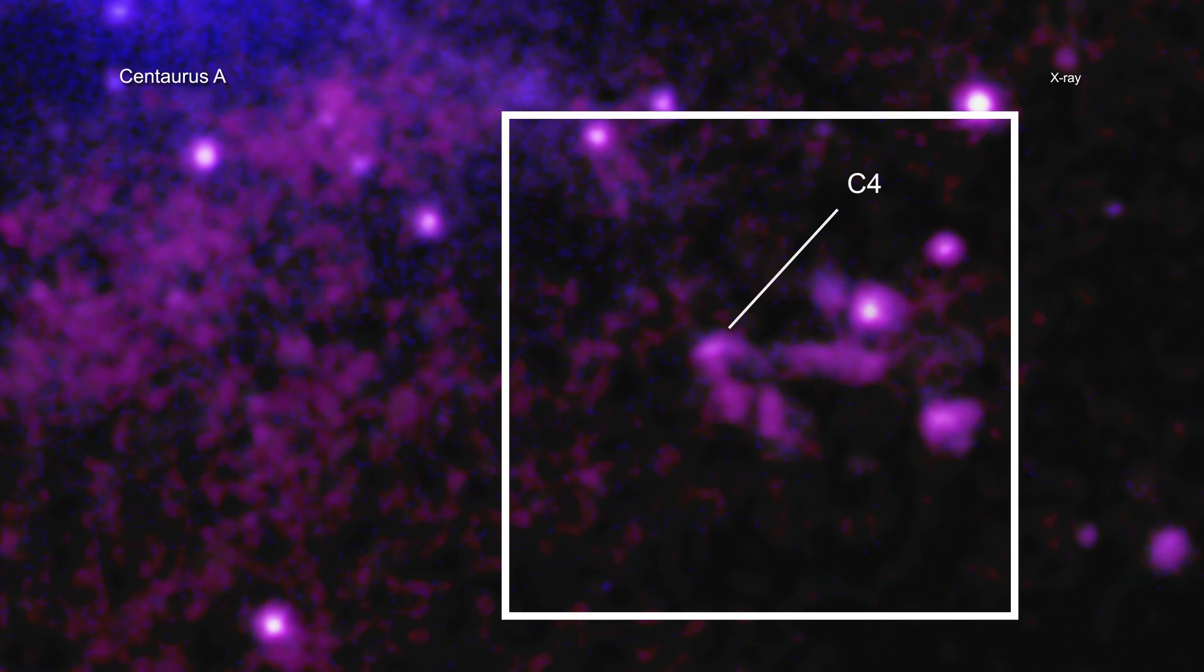The arms of the V are at least about 700 light-years long. For context, the nearest star to Earth is about four light-years away.